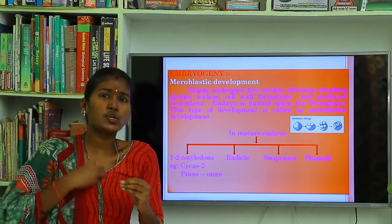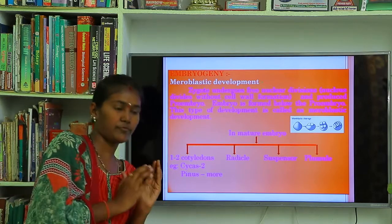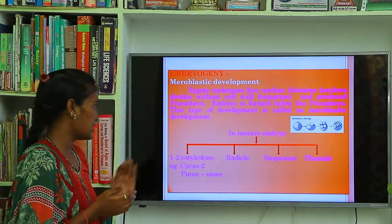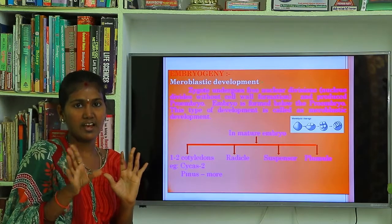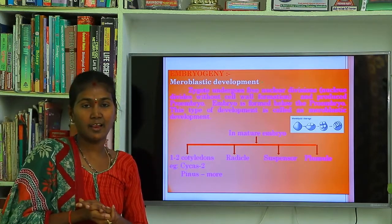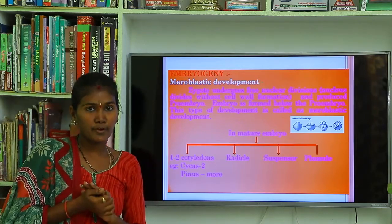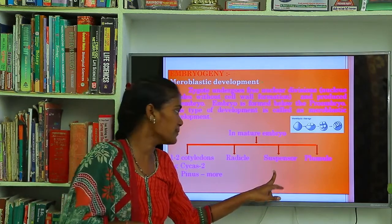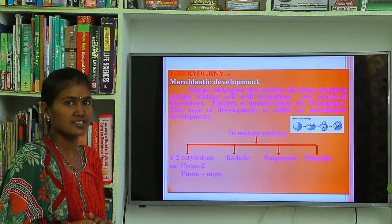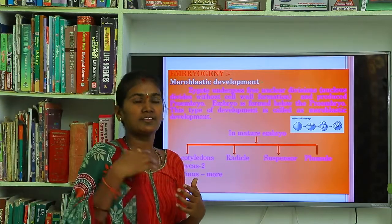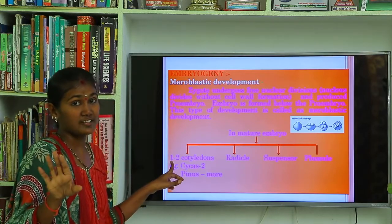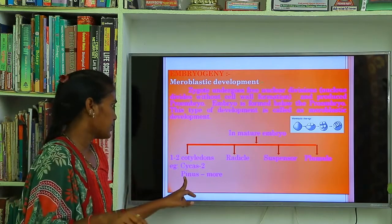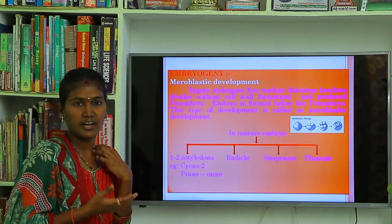When the mature embryo is formed, the following parts are observed: cotyledons — either one or two — radicle, which is the primary root, and plumule, which is the primary shoot. Also one special part: suspensors, which may be primary or secondary. In cycas, only two cotyledons are present. But in Pinus, more than two cotyledons are present.